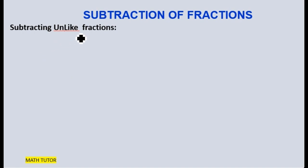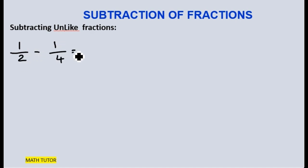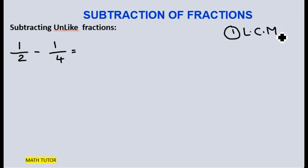Now let us see how to find the difference for unlike fractions. Let us take two unlike fractions: 1 by 2 minus 1 by 4. The first and most important step is you have to find the LCM. What will be the LCM for 2 and 4? It is 4.